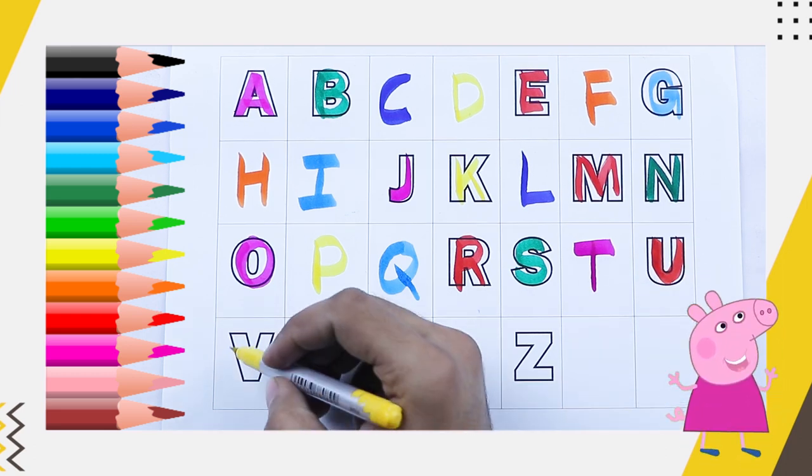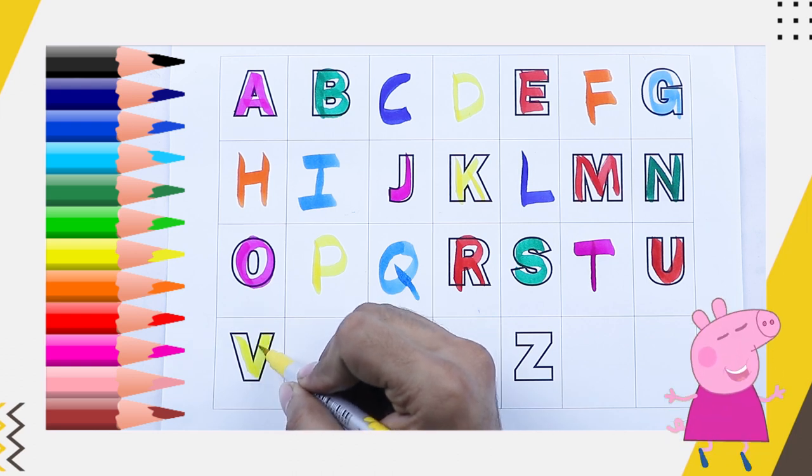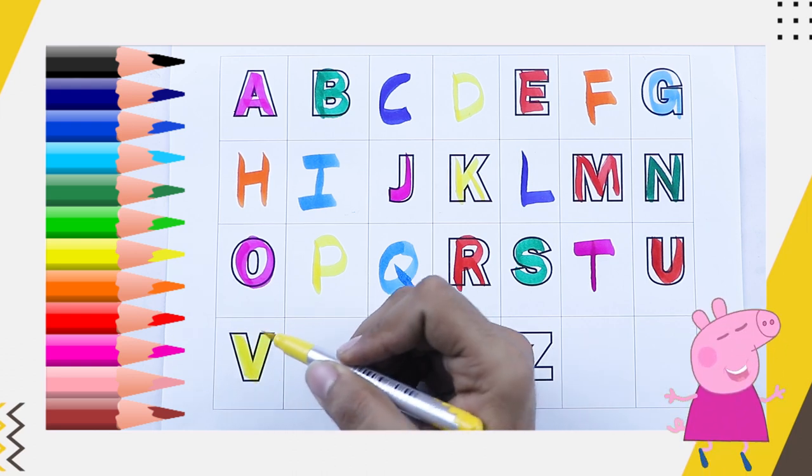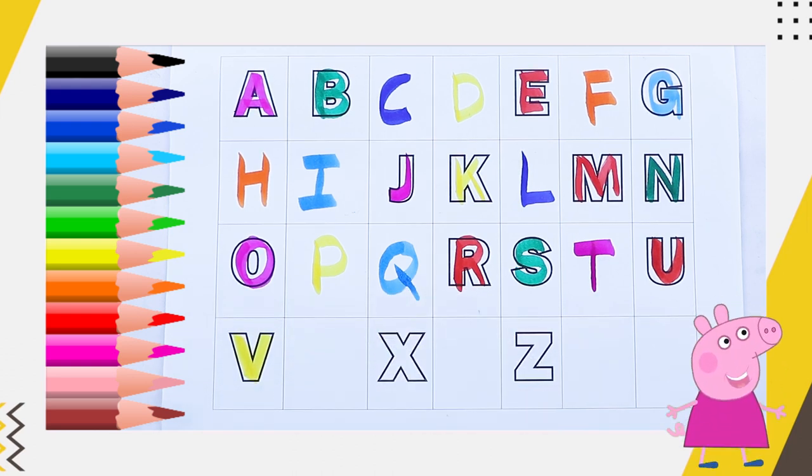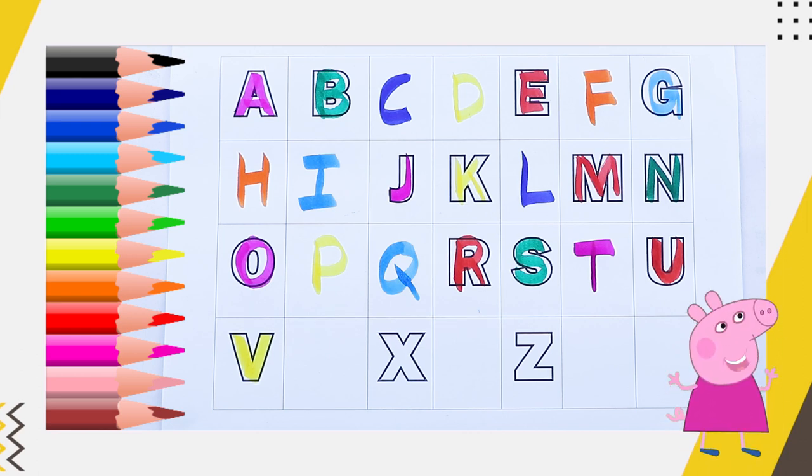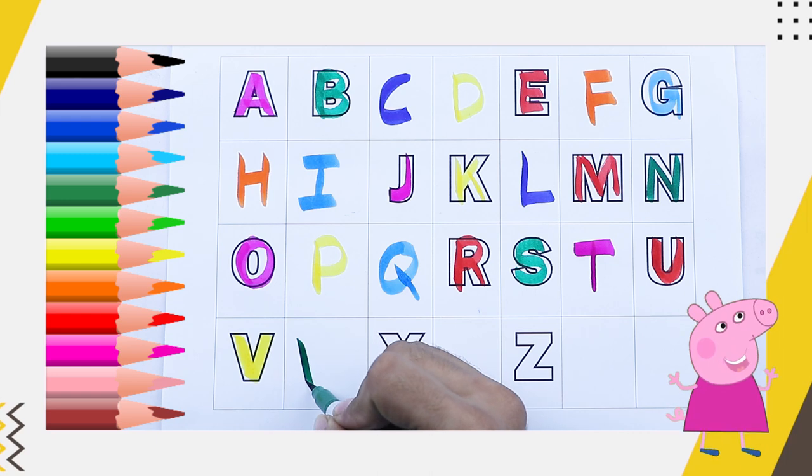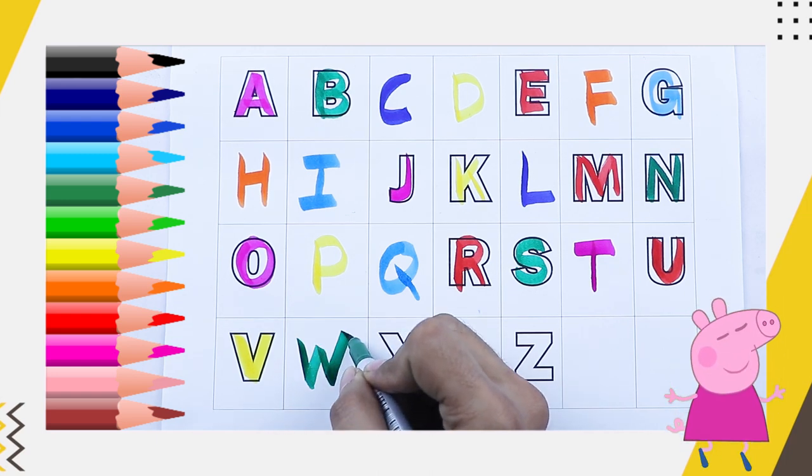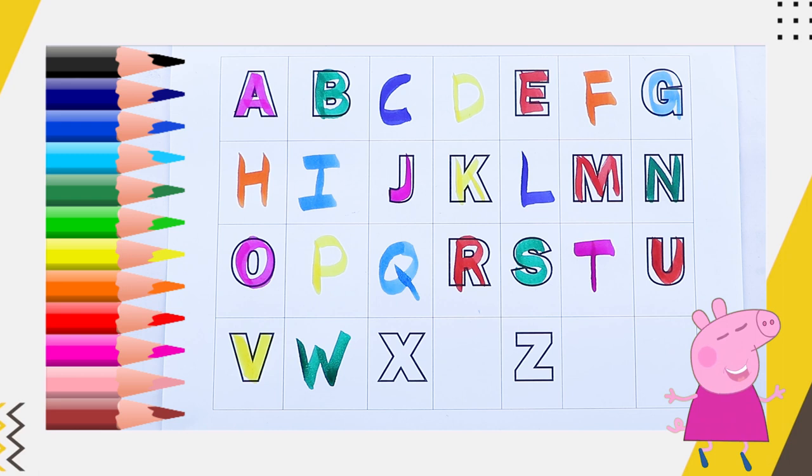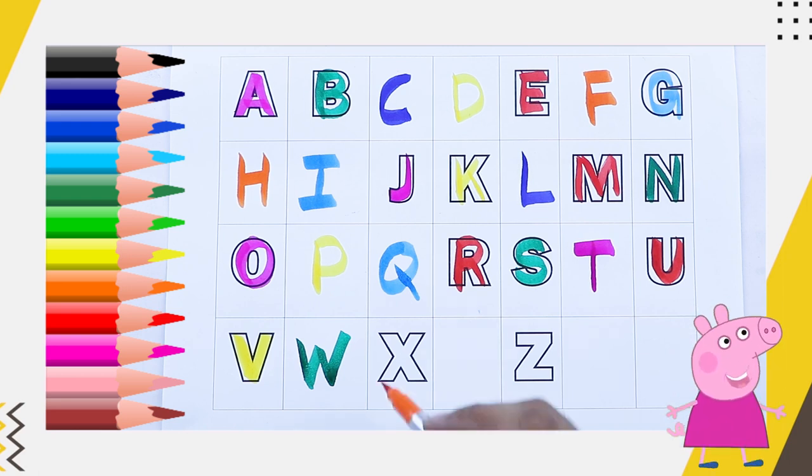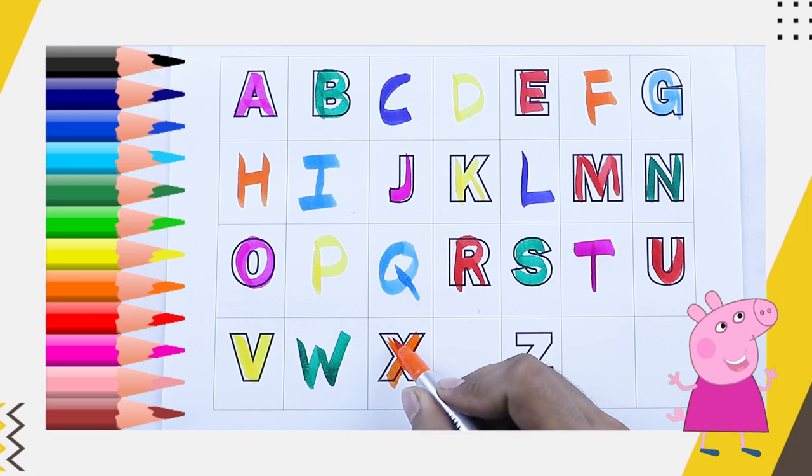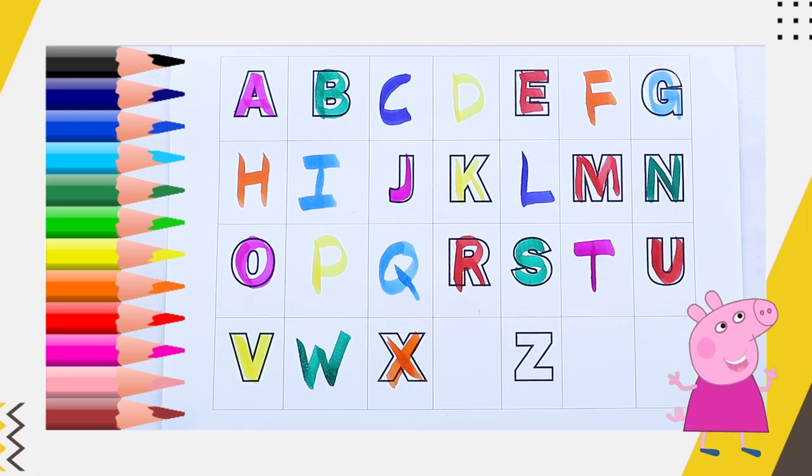B, yellow color, V, black, blue color, red color, Y, yellow color, pink color, V, green color, W, green color, W for watch. What next? Next X, orange color X, X for Xmas tree.